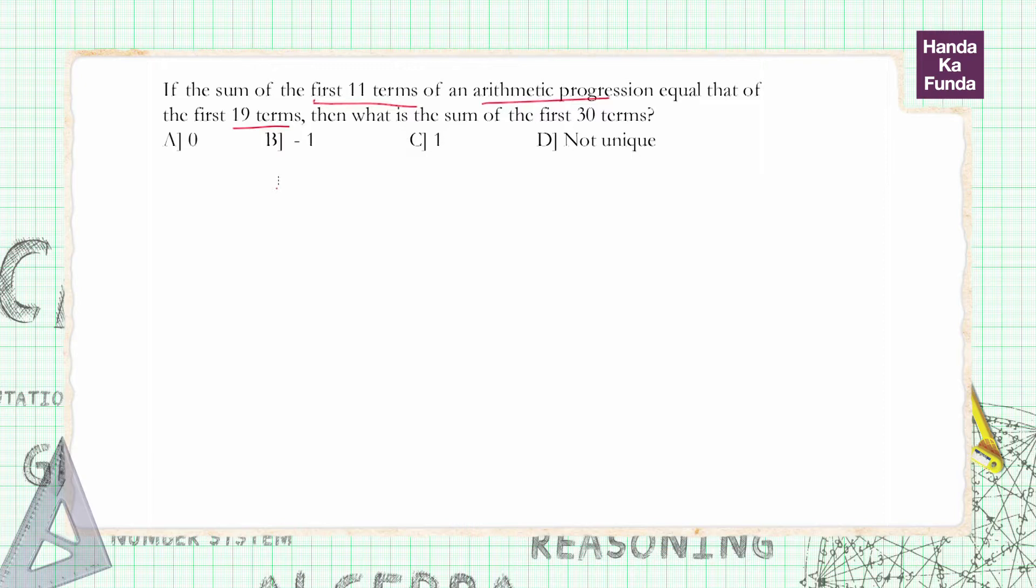So first of all what is the sum of the first 11 terms? 11 by 2 into 2A plus N minus 1 into D or 2A plus 10D. This is equal to sum of 19 terms so that is 19 by 2 and 2A plus 18D. Once again it is N by 2 into 2A plus N minus 1 into D.